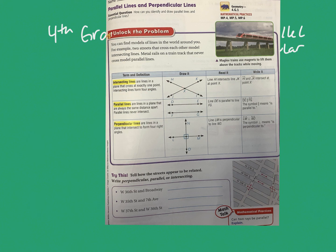Intersecting lines form four angles. Line HI intersects with line JK at point X. So this line intersects with this line at point X.